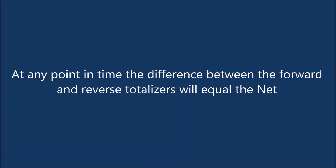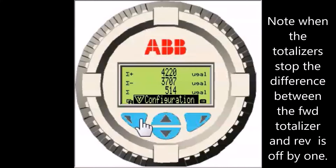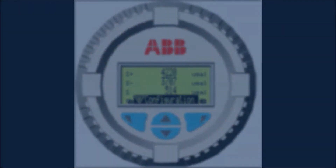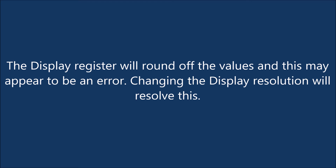At any point in time, the difference between the forward and reverse totalizers will equal the net. Note that when the totalizers stop, the difference between the forward totalizer and reverse totalizer may be off by 1. The display register will round off the values and this may appear to be an error — changing the display resolution will resolve this.